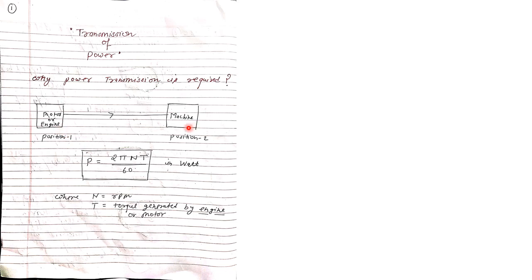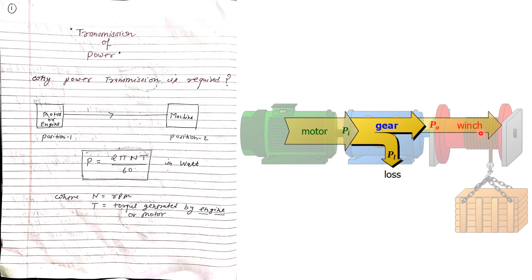The torque generated at the motor can be transmitted to the machine. For example, in power transmission from a motor to a winch, power is generated at the motor running at a higher speed, but the winch requires very low speed because the load is lifted slowly. The power system reduces the speed and transmits power over a certain distance. In an ideal power system there is no friction loss, so power at input equals power at output.